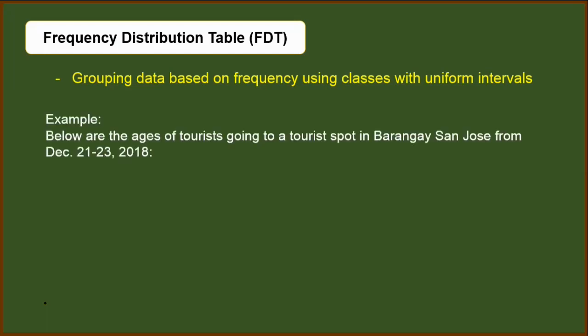Frequency distribution table, or what we will refer to as FDT, is actually a way of presenting the data using different classes with uniform intervals. This grouping will be based on the frequency of each data. For example, we are given this data set. Below are the ages of the tourists going to a certain tourist spot in a certain barangay for these dates.